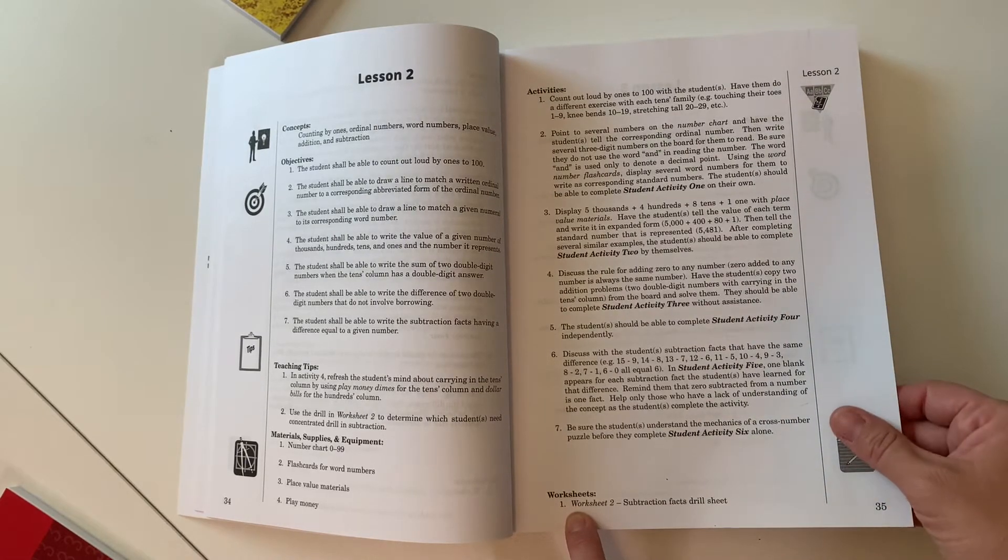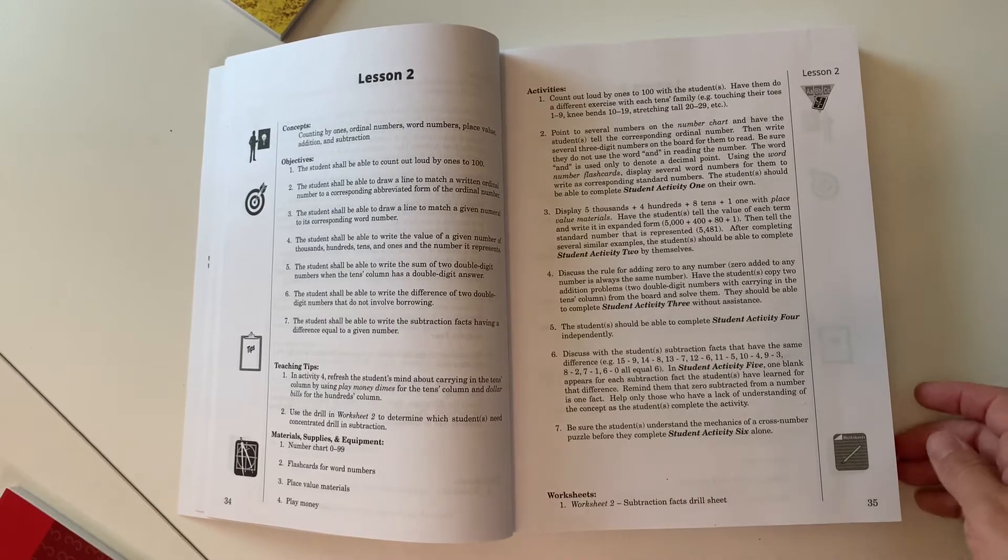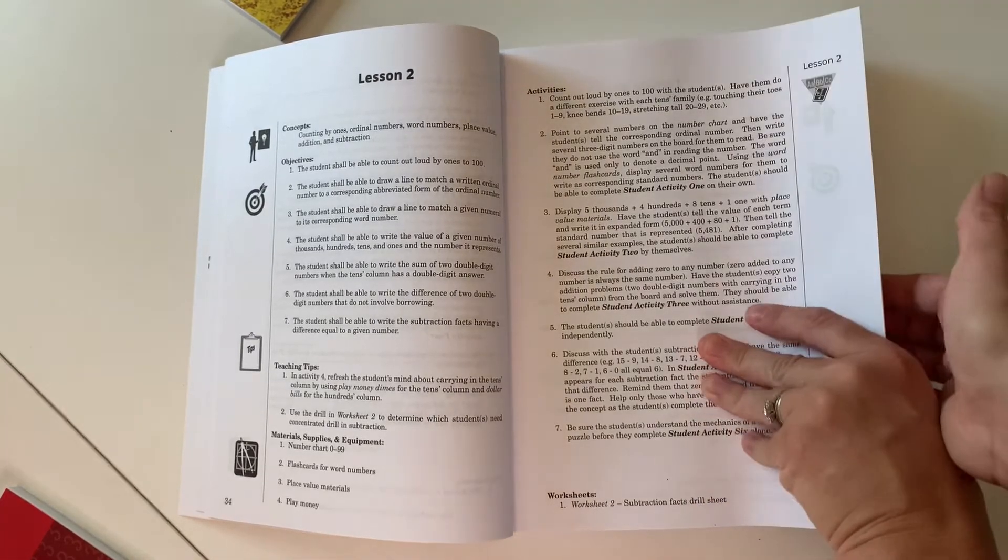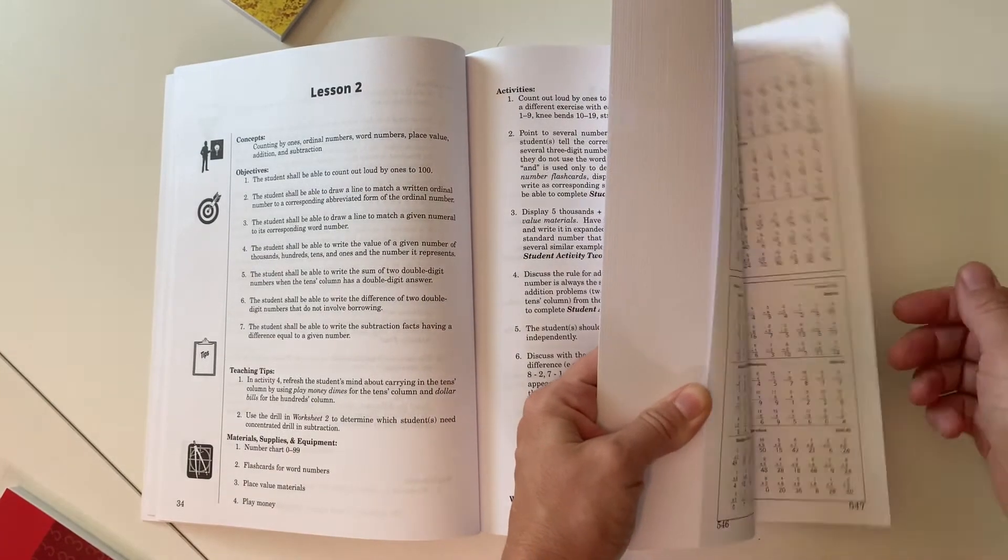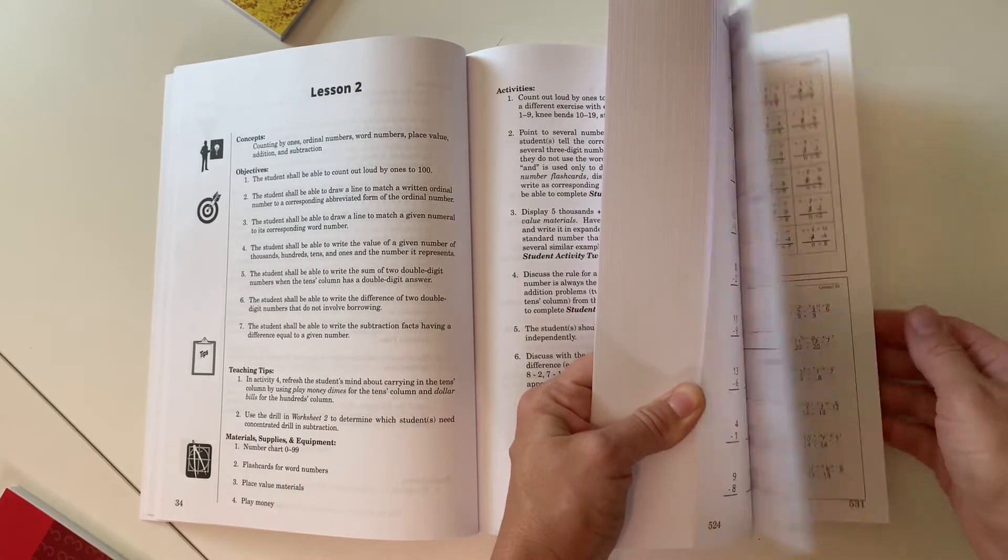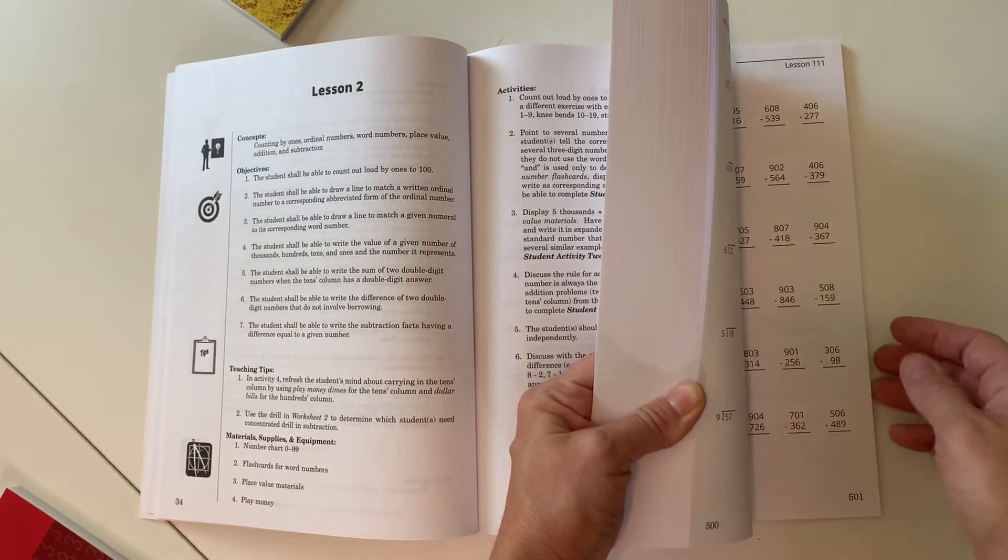At the bottom of the lesson, there are extra worksheets that you can give your child. These are in the back and we have actually never used them. To me, there's already enough problems in the book as it is. And we don't even do all of those. I don't see a reason to add even more work to the lesson for the day.